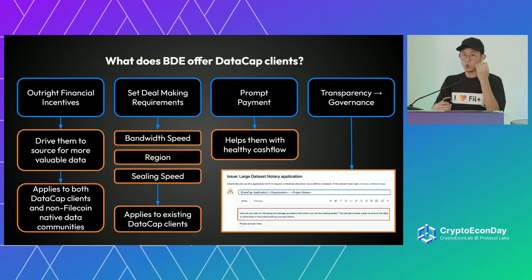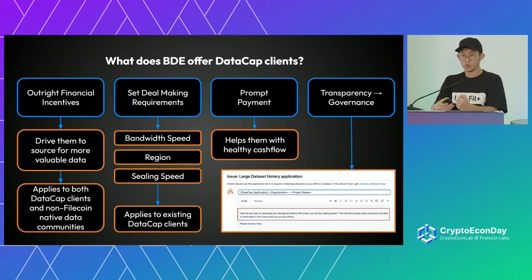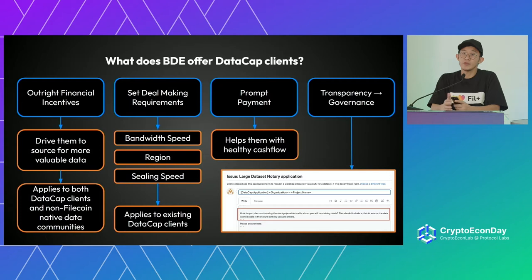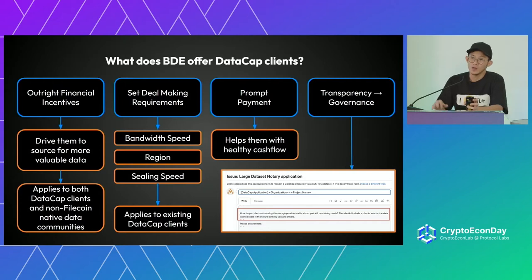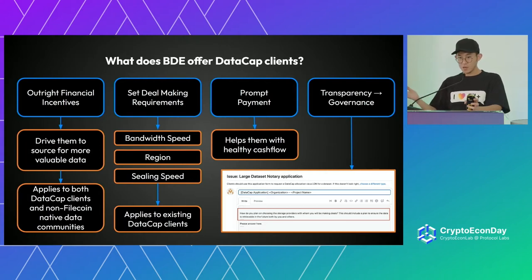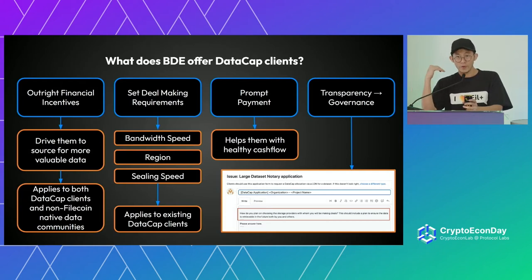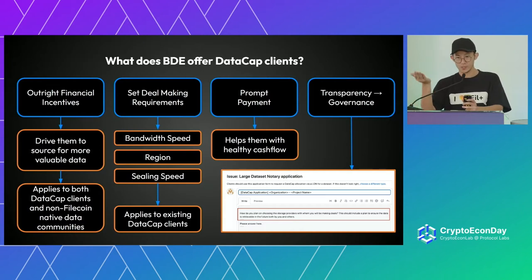You get prompt payment — once deal-making is done you receive tokens, which enables you to continue building your team and specializing in data-related services. The last thing I want to address is governance: recently there have been governance issues around data cap. Having BDE transactions on-chain where notaries or governance teams can observe the flow and movement of data cap payments means that when transactions are on-chain we can monitor abuse and take necessary steps to prevent them in the future.